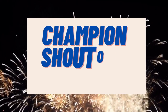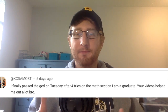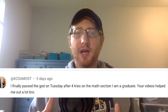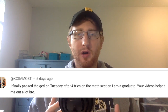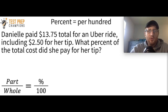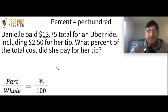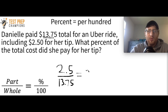This video's champion shout-out goes to a GED test taker who had some adversity with math, but after four tries finally passed. If you keep working hard and working smart, eventually you're going to get it done — just keep sticking with it no matter how hard it seems. Danielle paid $13.75 total for an Uber ride, including $2.50 for her tip. What percent of the total cost did she pay for her tip? Pause the video and try to figure this out. The big number, 13.75, is going to be my whole, and the smaller number, 2.5, is going to be the part.